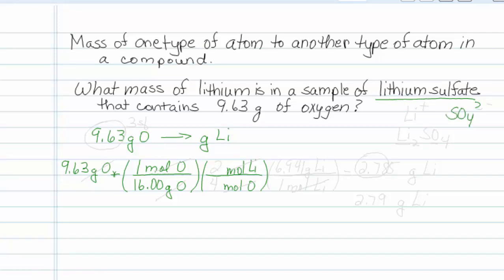Sulfate is a polyatomic ion with a 2 minus charge. Lithium is a cation with a plus 1 charge. In order to balance the charges, our compound has to be Li2SO4.